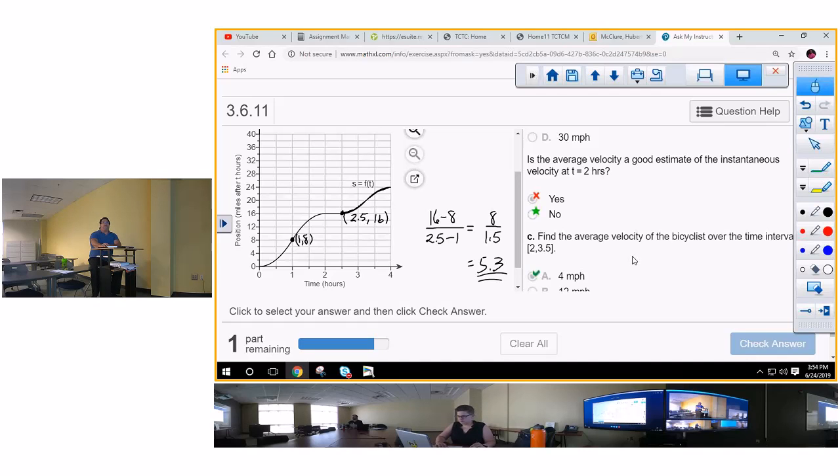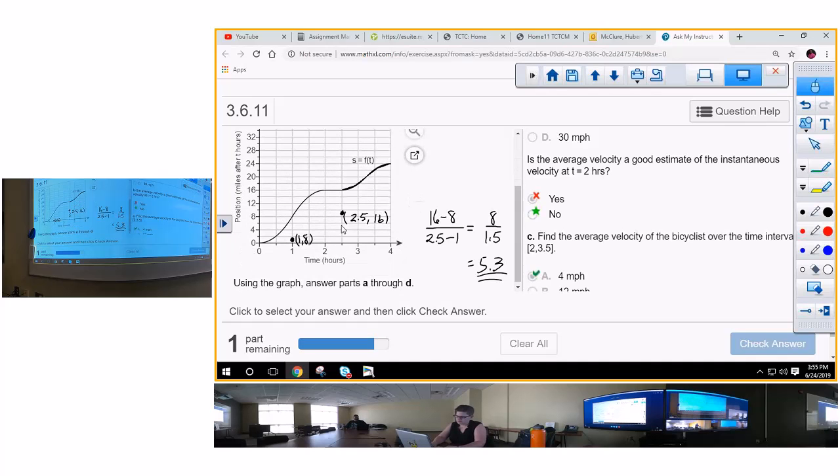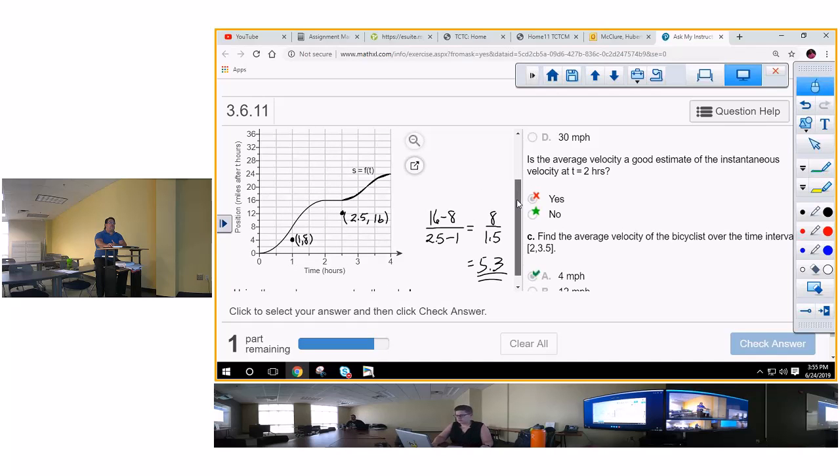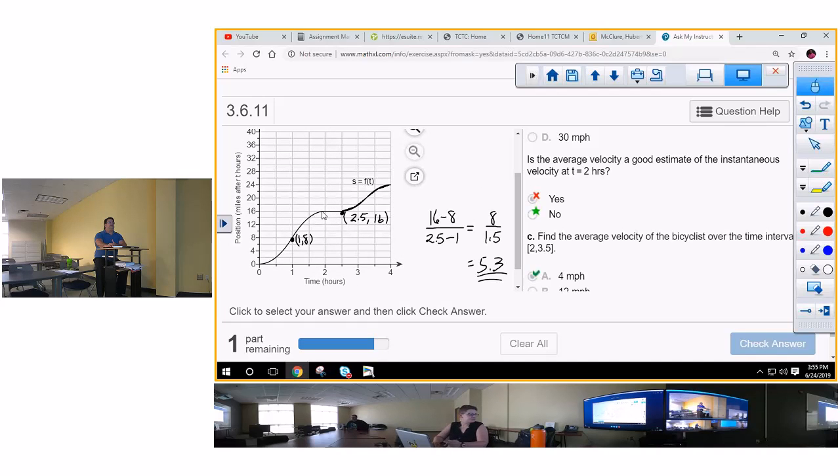Is the average velocity a good estimate of the instantaneous velocity? No. Why? Because look at this graph. What does this graph have in it? Is it a straight line or is it curves? Curves. It's curves. So you've got different, you've got fluctuations. You could be - this guy could be climbing up a hill. He could be doing all kinds of things - going over a hill, going down a hill. Looks like right here it kind of slacks off a little bit, because that could be level. So you can't know. And that's true on anything. The average velocity is not a good estimate of the instantaneous velocity.